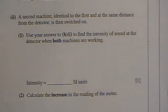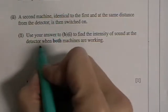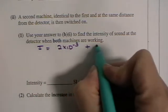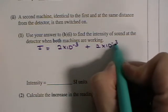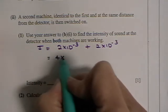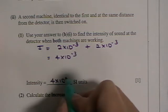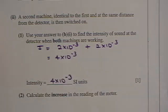So what you have to do here is just add up the two intensities. In other words, multiply that one by 2. So the intensity is 2 by 10 to the minus 3 plus 2 by 10 to the minus 3, and that gives you 4 by 10 to the minus 3. And again, that would be in watts per meter squared, but it's not written down here.